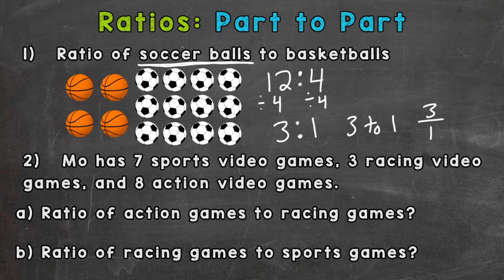So action games would be 8 to racing games, which would be 3, so 8 to 3. And that ratio cannot be simplified, so we keep it as 8 to 3. Remember, order matters. Action games had to come first and racing games second.